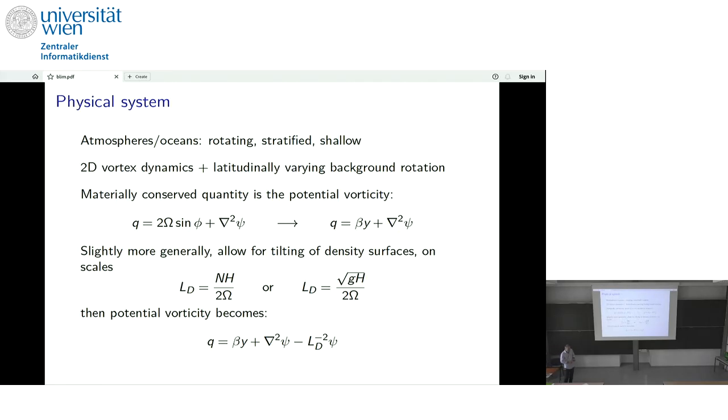So I'm going to be talking about beta plane representation of these, and basically the simplest possible physical system. The simplest possible physical system, I would say, is the barotropic vorticity equation, where Q is Laplacian of stream function plus a beta term, and that's materially conserved.